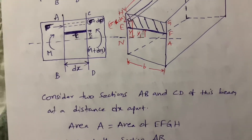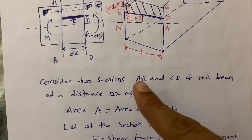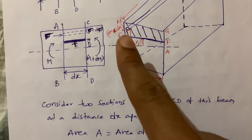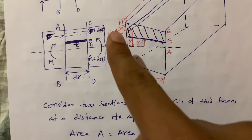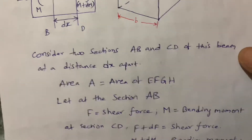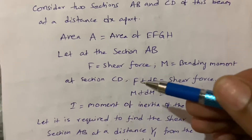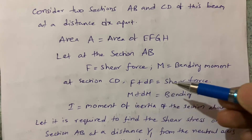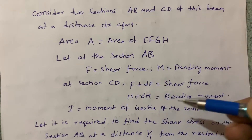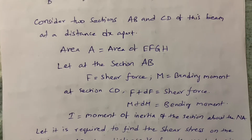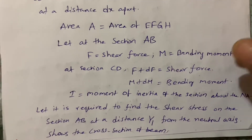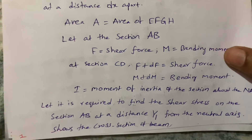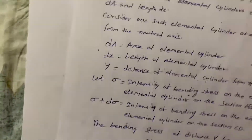I consider two sections and the area of EF GH. F is the shear force and M is the bending moment. F plus DF equals the shear force, M plus DM equals the bending moment. I is the moment of inertia of the section about the neutral axis.